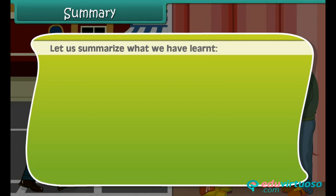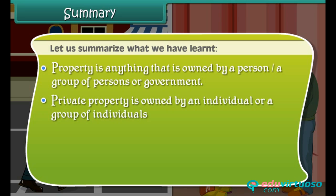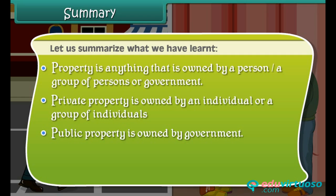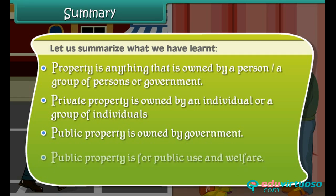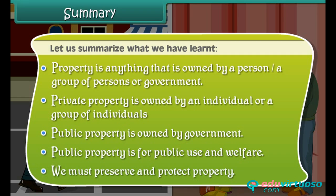Let us summarize what we have learned. Property is anything that is owned by a person, a group of persons, or government. Private property is owned by an individual or a group of individuals. Public property is owned by government and is for public use and welfare. We must preserve and protect property.